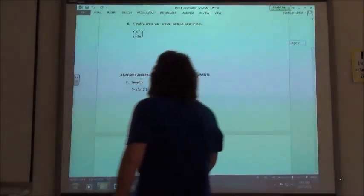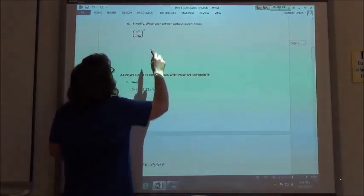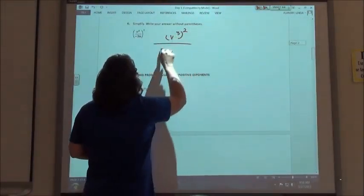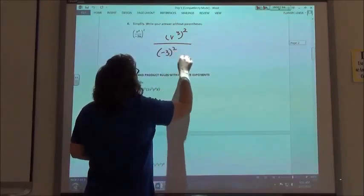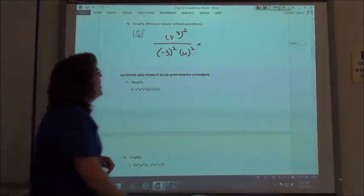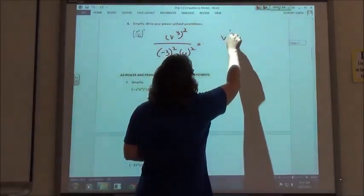Number 6 then, using my power rule, I'm going to square this one, so v to the third squared, negative 3 squared, and then the u squared. So again, my power rule says I multiply my exponents, so I'm going to get v to the sixth.